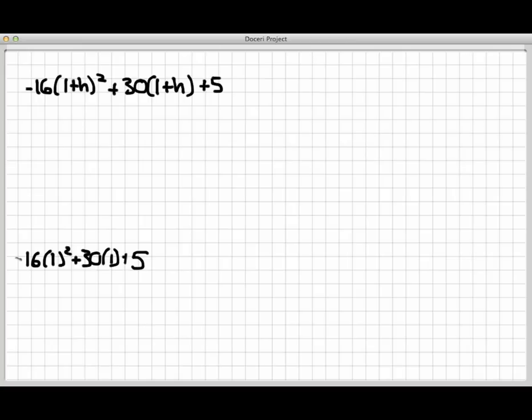And this is just basic algebra. So I'm going to go through and, let's see what we can do. In this first piece here, I can square the (1+h) using the FOIL method. That's going to give me -16 times (1 + 2h + h²). And then I can distribute this 30 throughout this group. That will give me 30 + 30h. And then I have a 5 hanging off the edge.